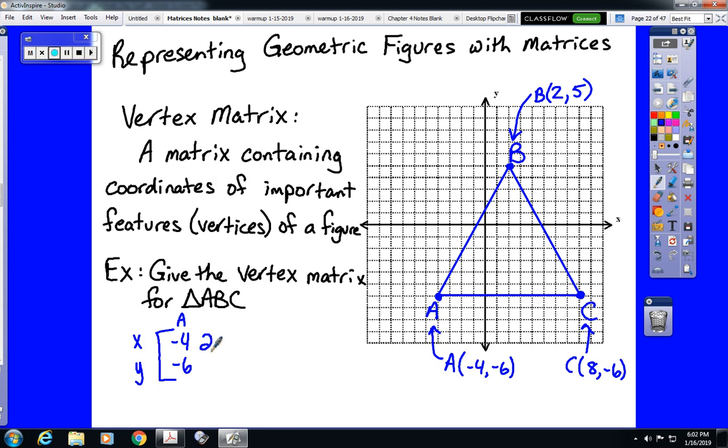B is at 2, 5, and C is at 8, negative 6. Now, it doesn't necessarily matter what order you list those columns in. It is common practice, though, to list them in the order that they are connected. So we could have easily switched the second and third column, and we would still have an appropriate vertex matrix for this triangle.